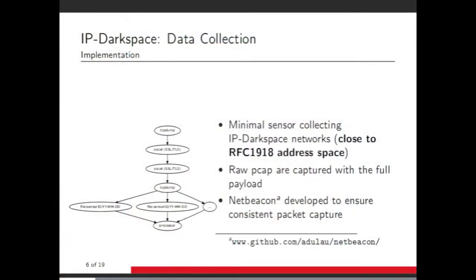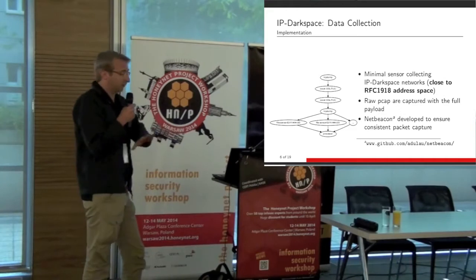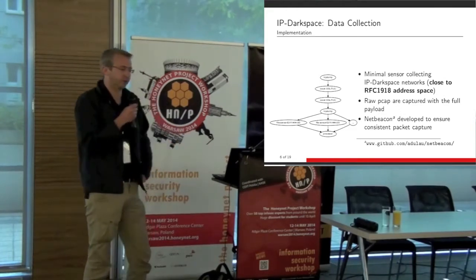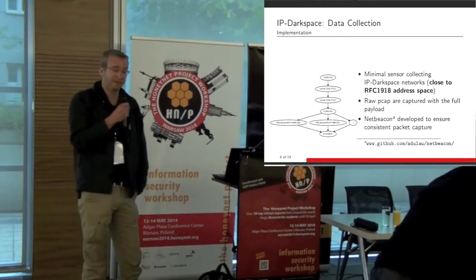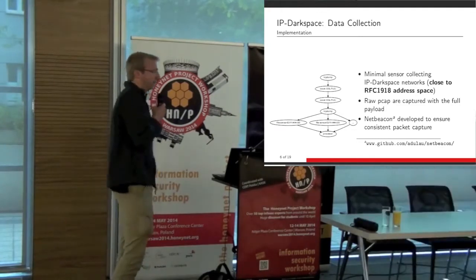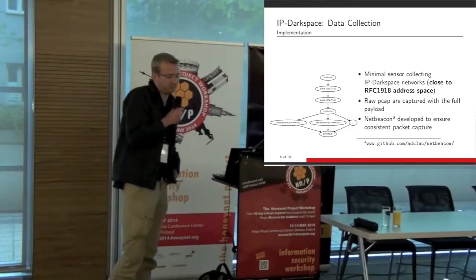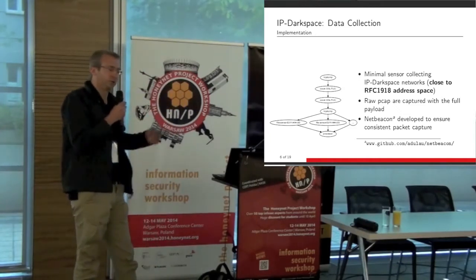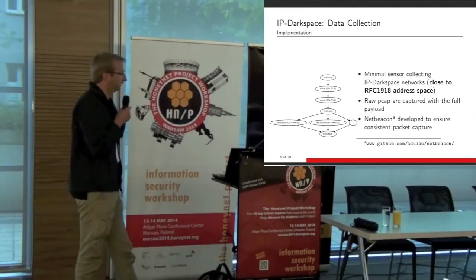So how do we operate the IP dark space? We have a minimal sensor — basically boxes connecting to the black hole network. These IP addresses are announced to the internet and we collect the raw packets. We don't do any modification, we don't reply — it's a real black hole. We get back the full payload to a centralized console. I also developed a small tool called NetBeacon: when you operate a black hole, you want to ensure it's working. NetBeacon sends regular beacons to the black hole to confirm the packet capture system is working properly. It's free software, and it helped us confirm the black hole is operating as it should.